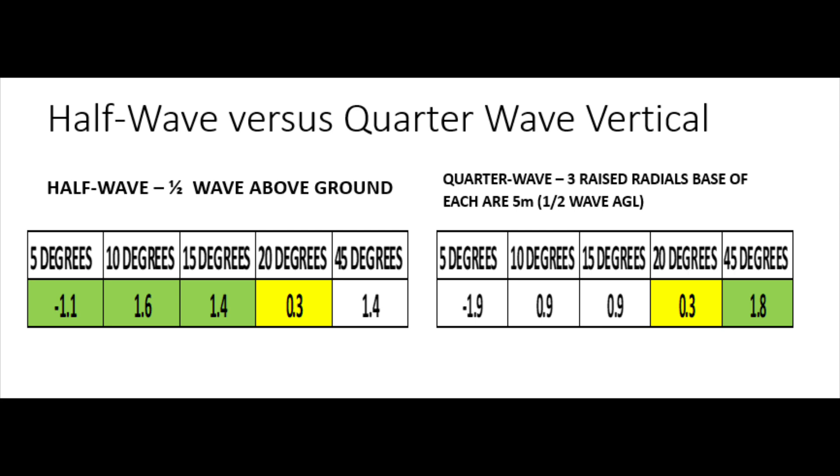And again, there's less of a difference now at 45 degrees, isn't there? Because it's now about 0.4 of a dB in favor of the quarter wave. So again, the lower angles of radiation seem to be favored for the half wave. Not by much. Between half and 1 dB, there is a slight advantage there. Would only make a difference in very, very few situations and very few occasions, but there is a slight difference. Let's carry on.